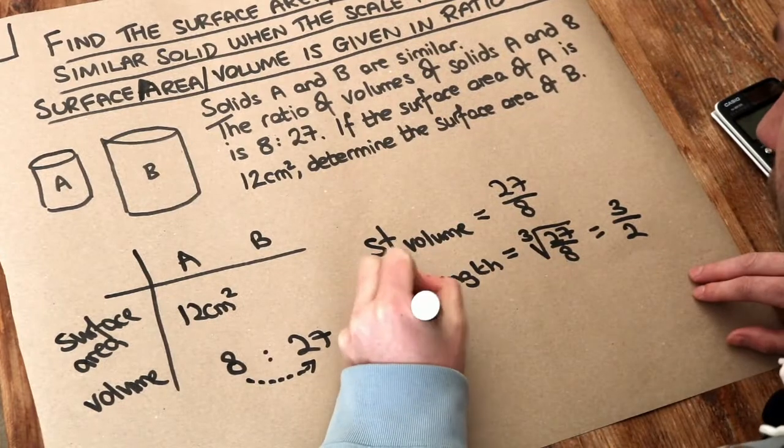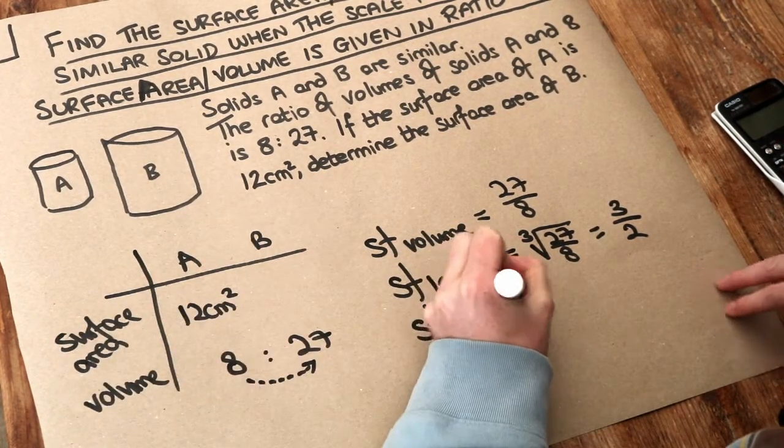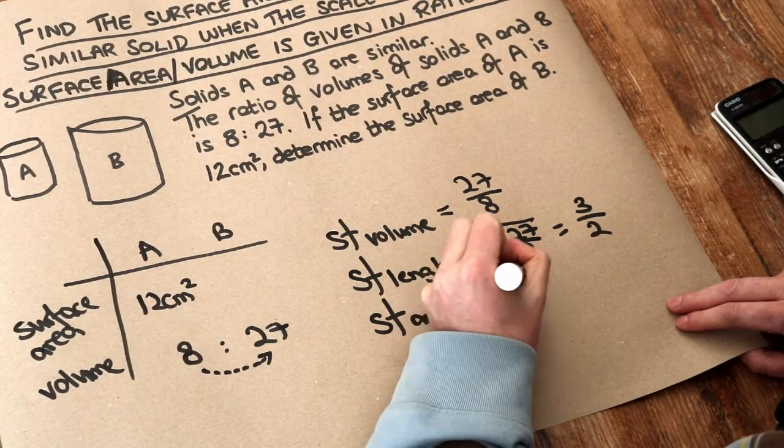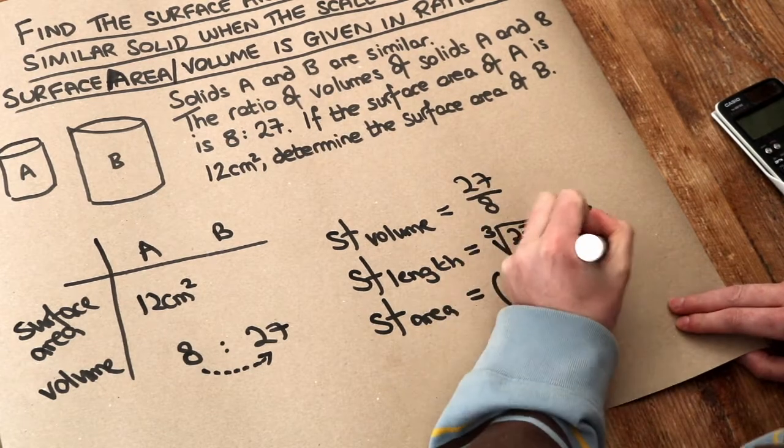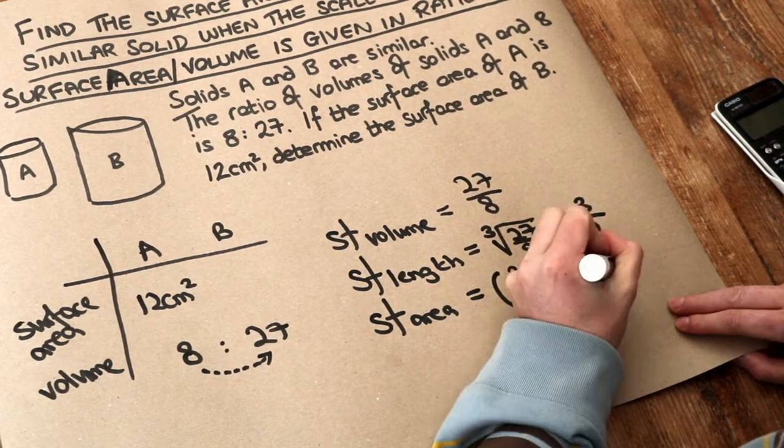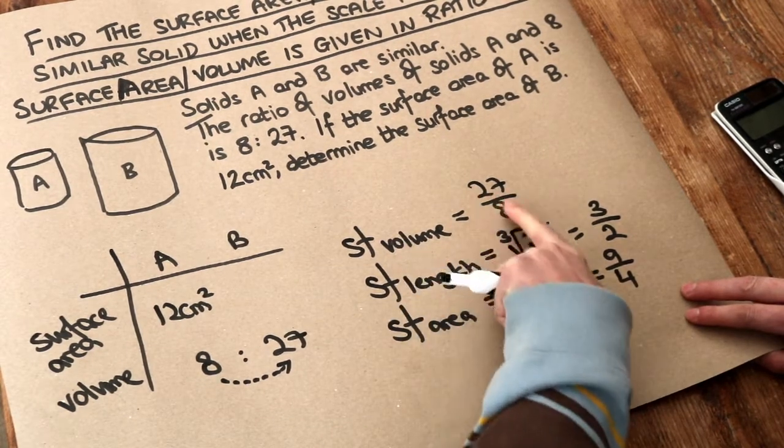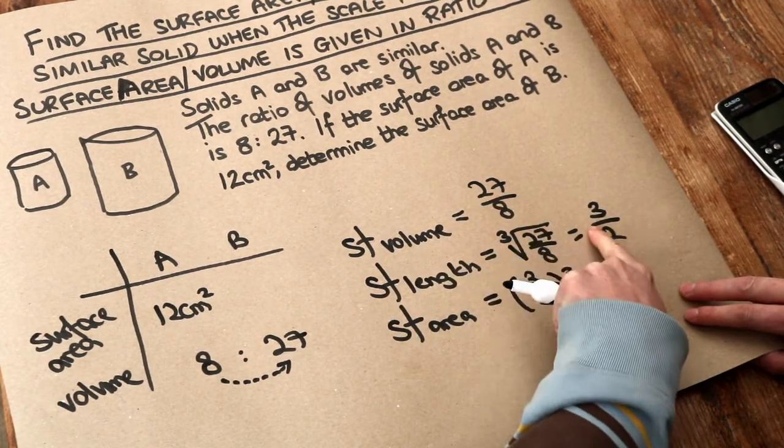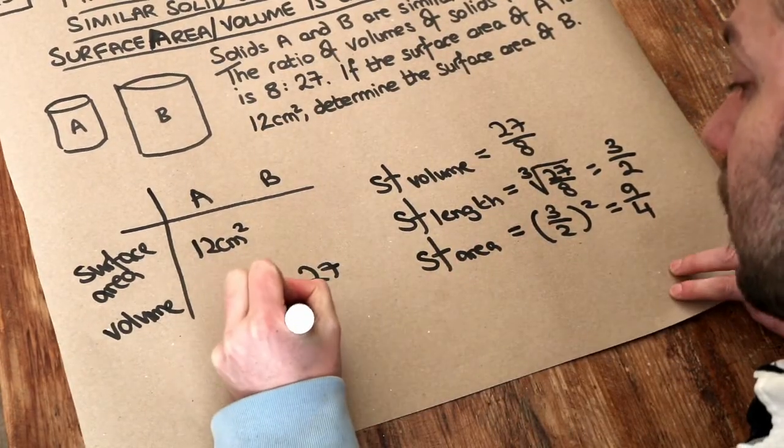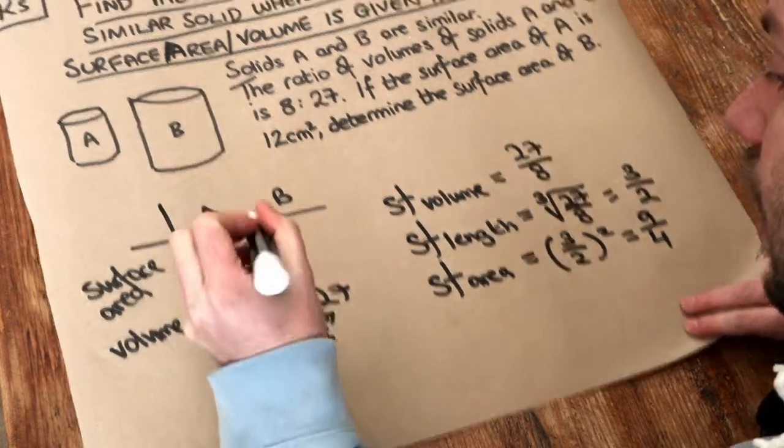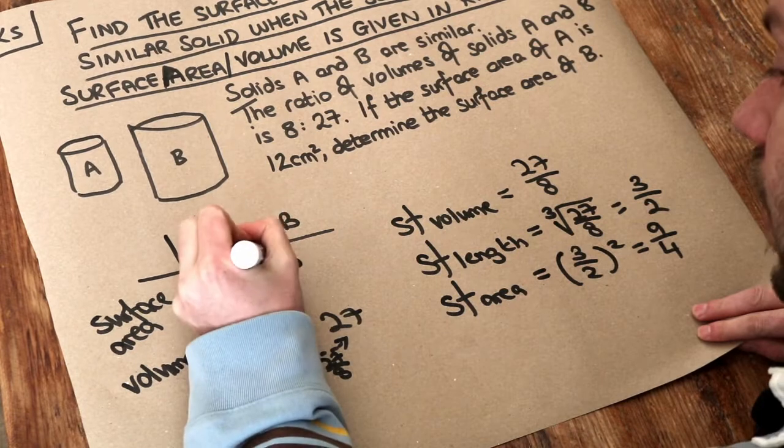Now if we've got the scale factor of length, we can find the scale factor of area, for example surface area, by squaring that scale factor of length. So if we do 3 over 2 squared, we square the 3 which is 9, square the 2 which is 4. The advantage of leaving the scale factor of volume in fractional form is that it makes it easier to cube root it and then square it. So the scale factor of volume is 27 over 8, and the scale factor of area such as surface area is 9 over 4. So the surface area of B is 9 over 4 times bigger than the surface area of A.